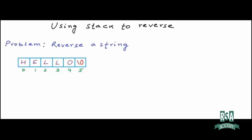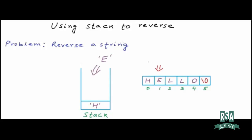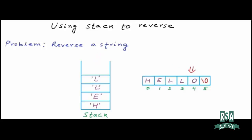What we can do is create a stack of characters. I am showing the logical representation of a stack here — right now it's empty. We can traverse the characters in the string from left to right and start pushing them onto the stack. So first H goes into the stack, then E, then L, then another L, and finally O.